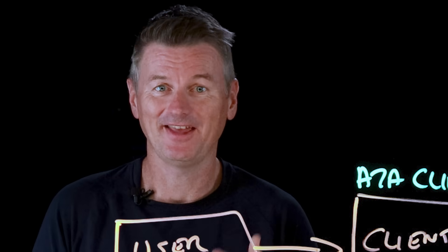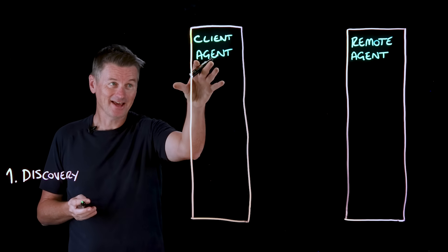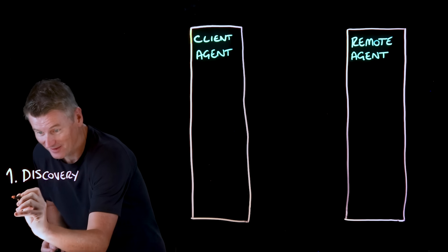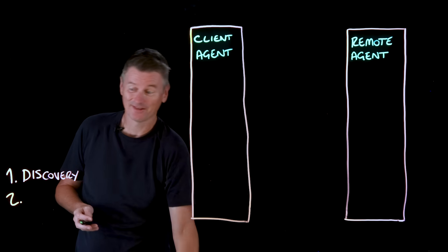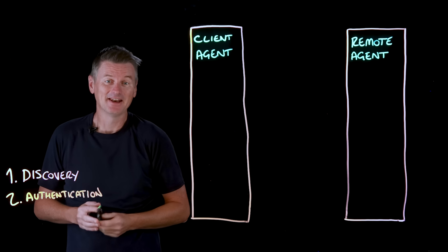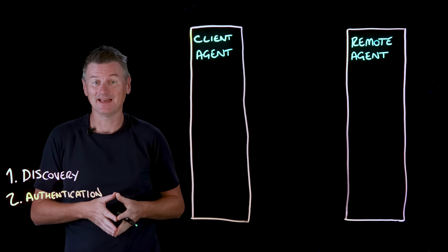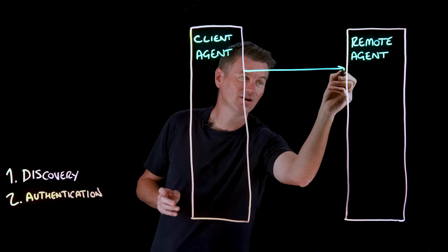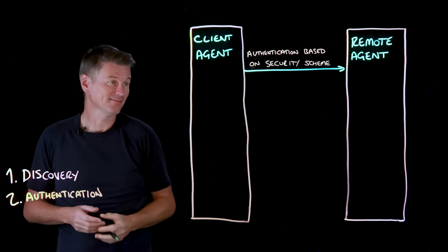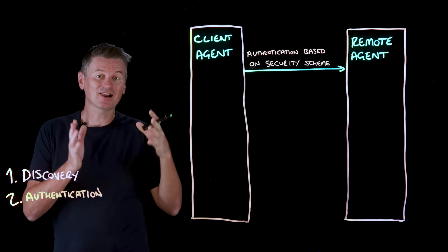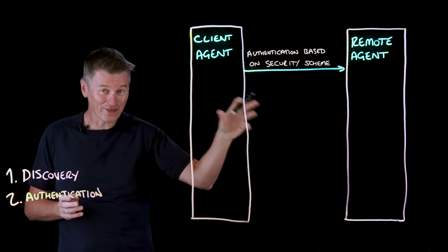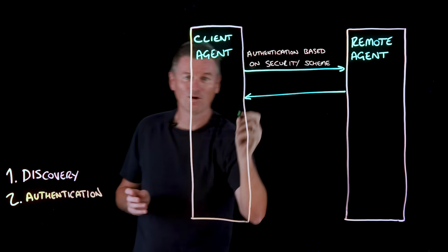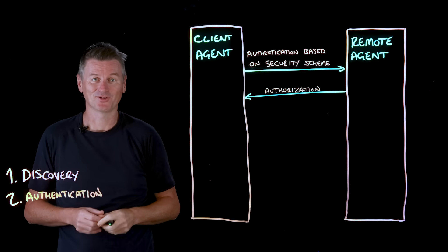Now let's focus on the agent interactions. The client agent knows how to find the remote agent, so it's time for stage two: authentication. That happens through the security scheme indicated in the agent card. Once the client agent has been successfully authenticated, the remote agent is responsible for authorization and granting access control permissions.